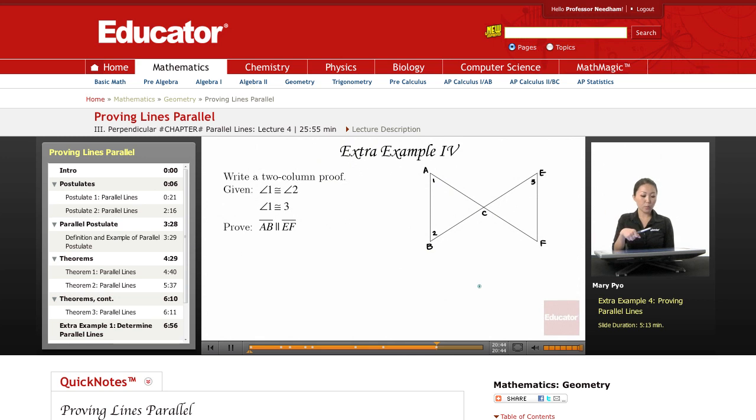Okay, the last example, we're going to do a proof. So, write a two-column proof. Before we begin, you should always look at what's given, what you have to prove, and the diagram.